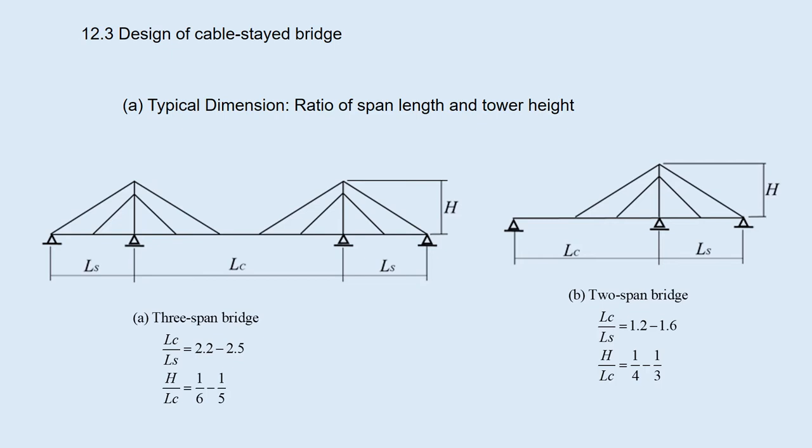For 3-span bridge, LC over LS is from 2.2 to 2.5, H over LC equals 1.6 to 1.5.